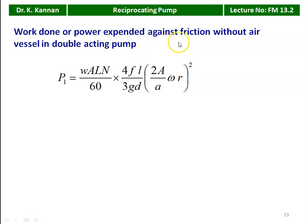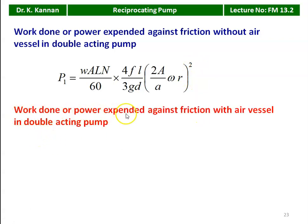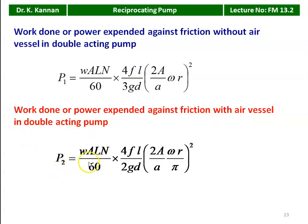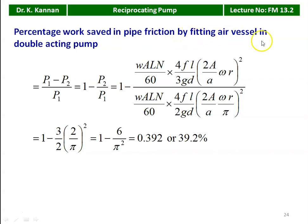Work done or power expended against friction with the air vessel in a double acting pump: P1 = W·A·L·N/60 × (4FL)/(3gD) × (2A/a) × (ωR)². P2 = W·A·L·N/60 × (4FL)/(2gD) × (2A/a) × (ωR/π)². The percentage of work saved = 1 − P2/P1 = 1 − (6/π²) = 0.392, or 39.2%. In a double acting pump, we can save 39.2% of power when you install the air vessel.